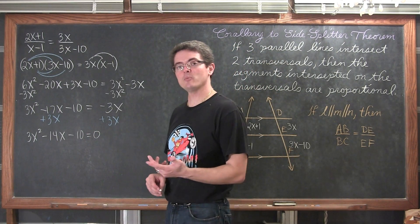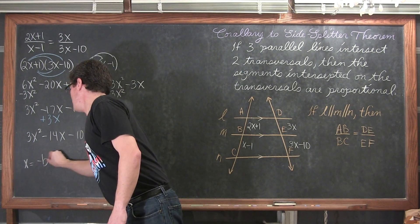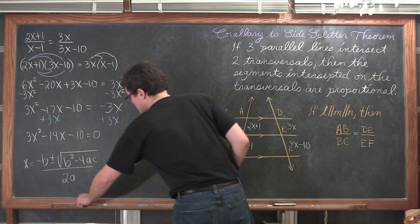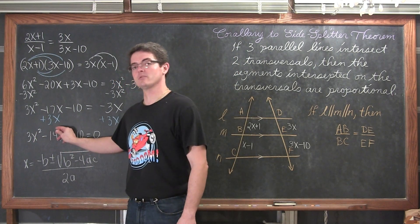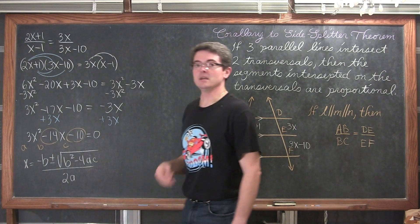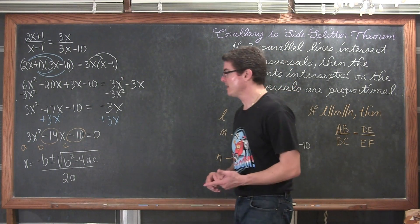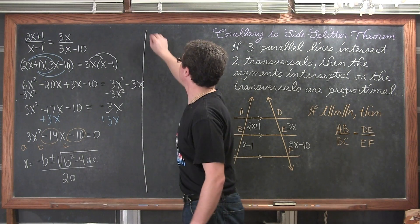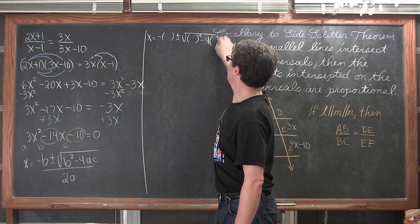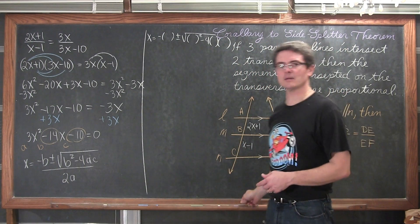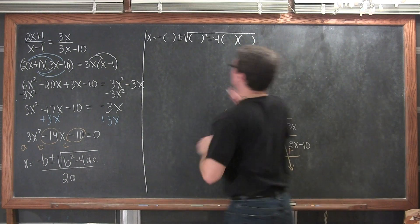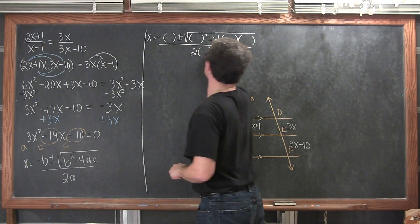If you forget how to factor, you might want to look up my videos. I will just quickly say when your leading coefficient is not equal to one, you want to take your leading coefficient and your constant, multiply them together. So, it is going to be 3 times negative 10 which is negative 30. If there are factors of that product that add up to the middle term, then it is factorable. If there is not, then it is not. This is not going to be factorable. So, what that means is we are going to have to use the quadratic formula to finish solving this, which is x is equal to negative b plus or minus the square root of b squared minus 4ac all over 2a.